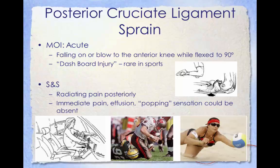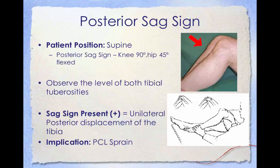A popping sensation may be absent even though the tendon is ruptured, and the patient will complain that the knee feels unstable and may give out, similarly to an ACL injury. A way to evaluate for a PCL sprain is the posterior sag sign. The patient is positioned supine with the knee flexed to 90 degrees and the hip flexed to 45 degrees. We observe the level of both tibial tuberosities — if the tibial tuberosity sags posteriorly on one side compared to the other, the sag sign is positive, indicating a unilateral posterior displacement of the tibia and a PCL sprain in that leg.